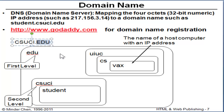You have to be a legitimate educational institution to register the .edu top-level domain name. Some popular top-level domain names are .com for commercial, .org for nonprofit, .gov for government, and .net for network service providers. You can go to GoDaddy.com or other domain name registration sites to register domain names such as .com, .org, .net, or country domain names such as .uk for United Kingdom or .cn for China. You cannot register .edu or .gov unless you're an educational institution or government agency.